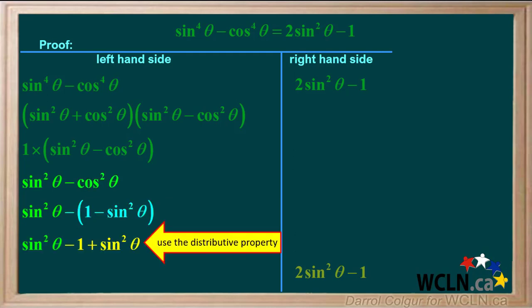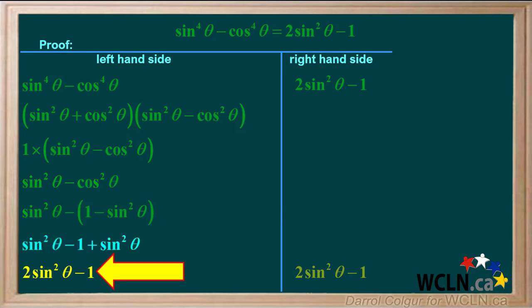We'll use the distributive property and multiply both terms in the bracket by negative one, giving us this expression. This simplifies to two sine squared theta minus one.